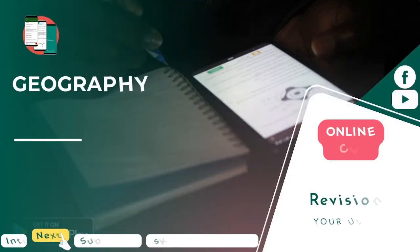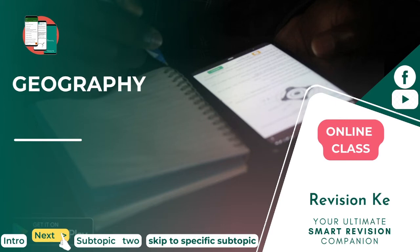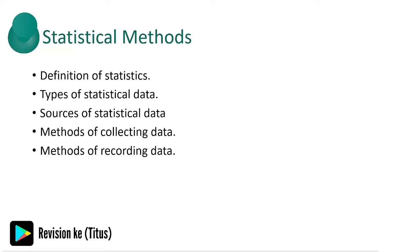You might need to skip to a specific topic, however this topic is quite detailed so you may not need that for now. By the end of this topic we hope to have defined the term statistics, identified types and sources of statistical data, identified and described methods of collecting and coding data, analyzed and interpreted data, and presented statistical data using appropriate graphical methods. We'll also explain the advantages and disadvantages of each method used to present data. Let's define what statistics is.